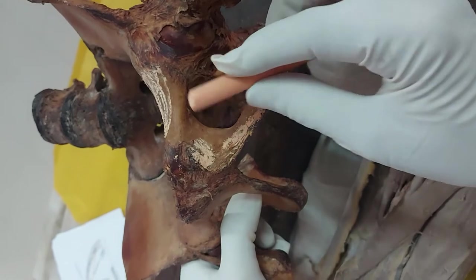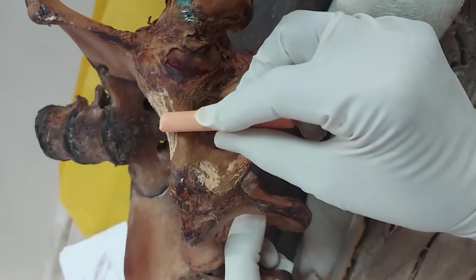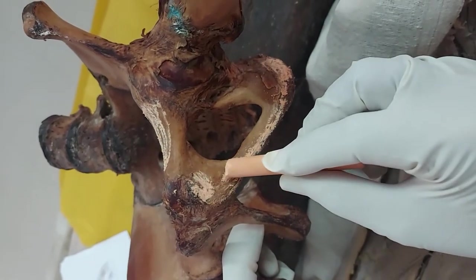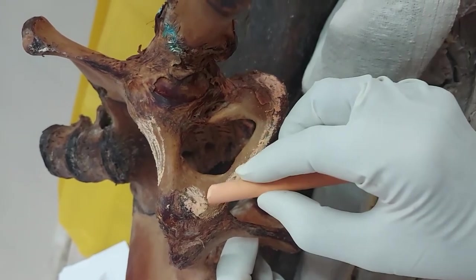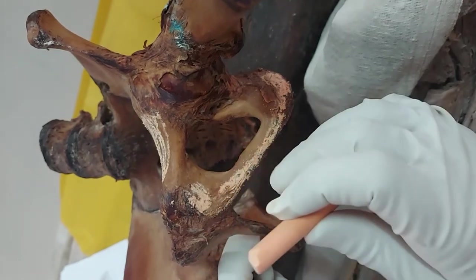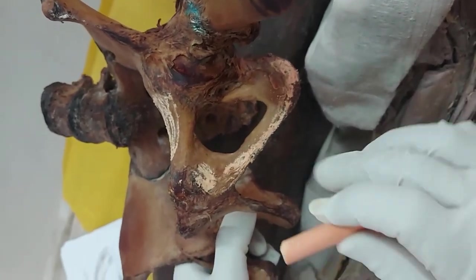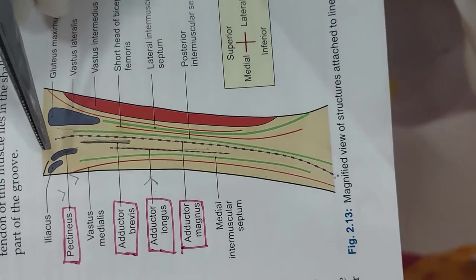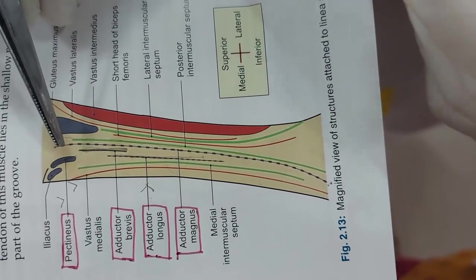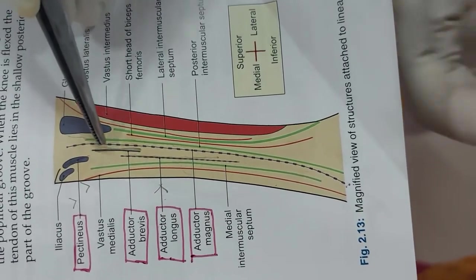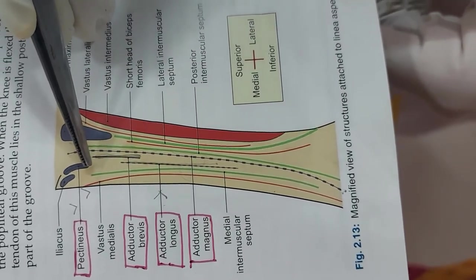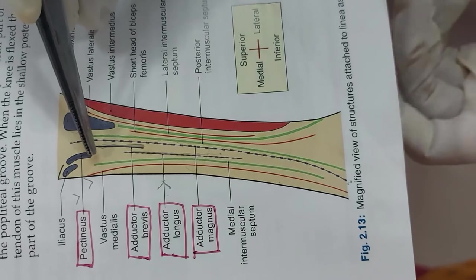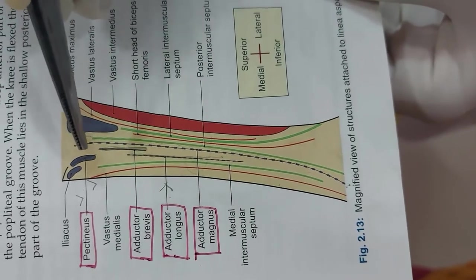We have now marked the origins of pectineus, adductor longus, adductor brevis, adductor magnus, and gracilis from the pubic part of the hip bone. The insertion of all these muscles is onto the posterior border of the femur — the linea aspera and posterior surface of the femur — except for the gracilis muscle, which inserts onto the tibia.